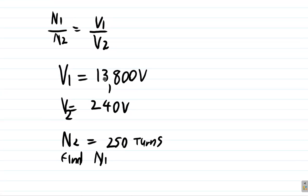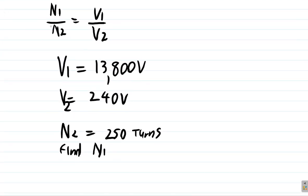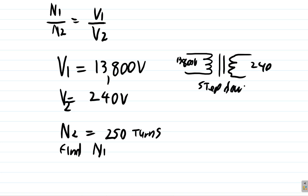So here we have our transformer. We have 13,800 volts applied to the primary and 240 volts coming out, so it's a step-down transformer. You're reducing the voltage, stepping the voltage down.